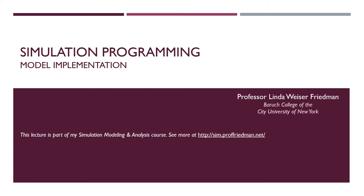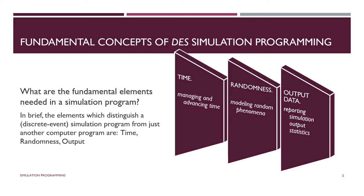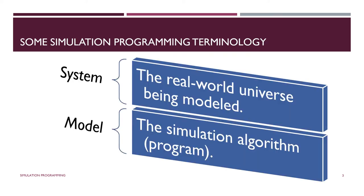In this lecture we review the language and some of the issues in implementing a discrete event simulation model, also known as simulation programming. The fundamental elements that distinguish discrete event system simulations are time, randomness, and output — each of which will merit its own lecture later in the course. Here we'll spend a little time looking at the language of model implementation and simulation model programming.